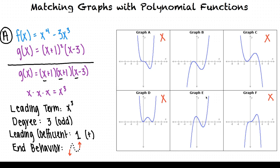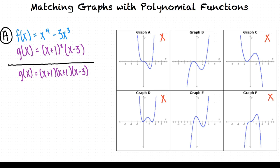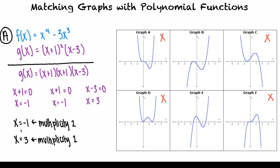Next we want to look at the zeros of our function. If we set each factor in our function equal to zero, we get that x equals negative one with a multiplicity of two, and x equals three with a multiplicity of one. The multiplicity of the zero x equals negative one is two, which is even. This tells us that the graph of g touches but doesn't cross the x-axis at negative one. The zero x equals three has a multiplicity of one, which is odd, and tells us that the graph of g crosses the x-axis at three.